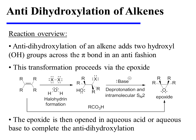The anti-dihydroxylation of an alkene adds two hydroxyl groups across the pi bond in an anti-fashion. This transformation proceeds via the epoxide. If you'd like to refresh your memory on ways to make epoxides, you may find it helpful to view the video on epoxidation of alkenes. But as a very brief review,